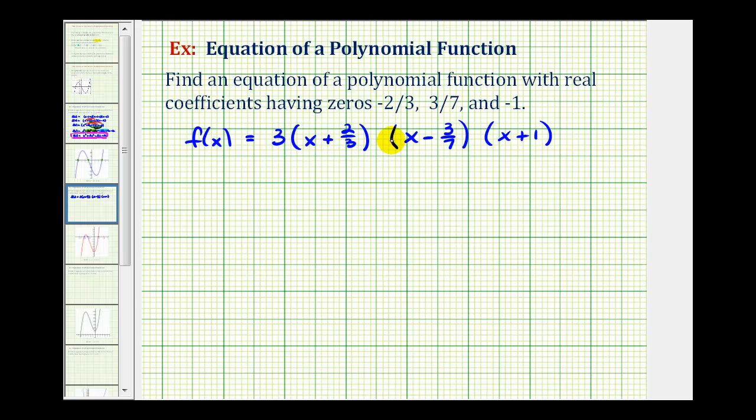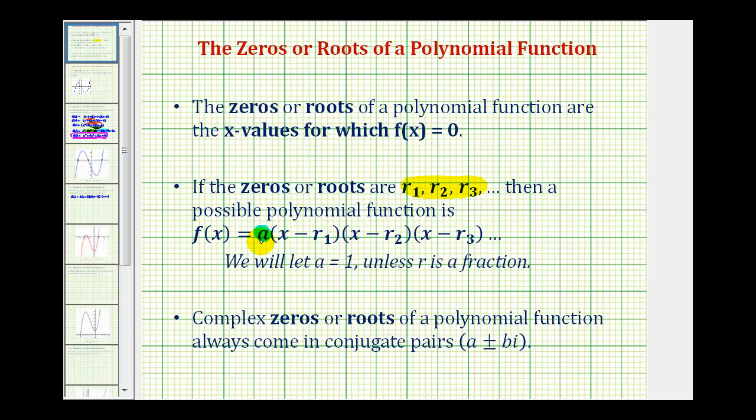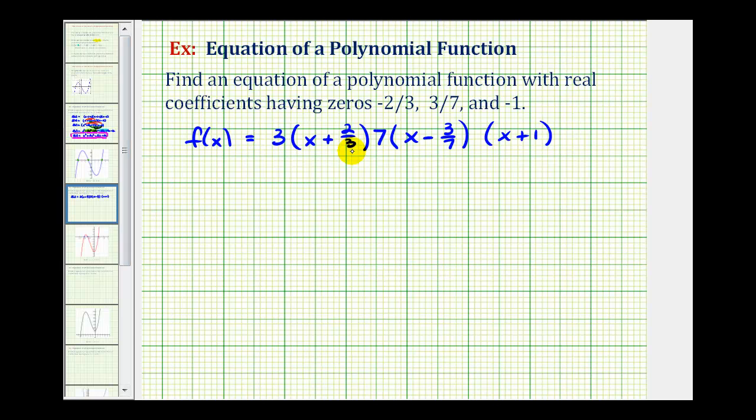which notice again is a denominator. We can clear the fractions from the second factor by multiplying by a factor of 7. Again, notice 7 is the denominator of the fraction. And since 3 times 7 is equal to 21, if we go back to the previous slide, our value of a would be 21. But we're not going to leave it in this form, because we actually want to clear these fractions.